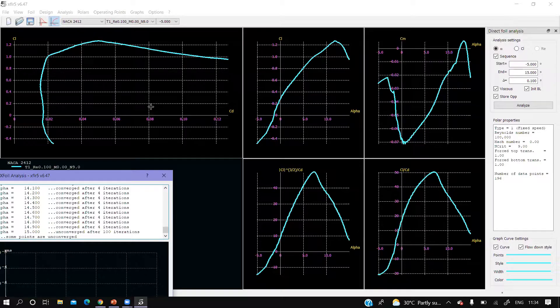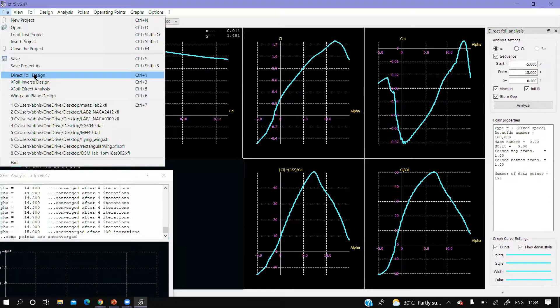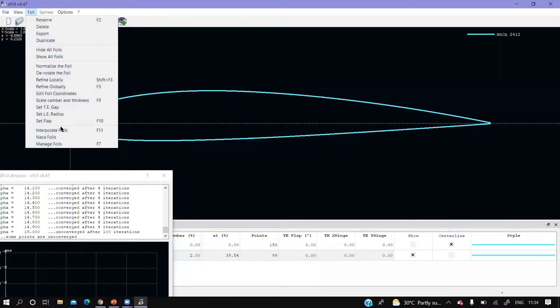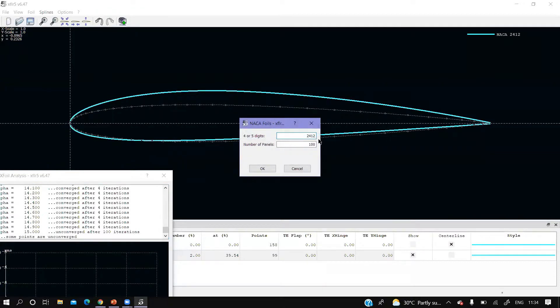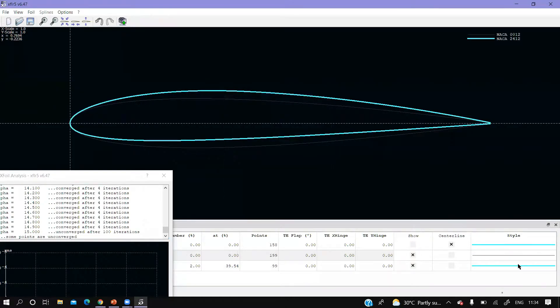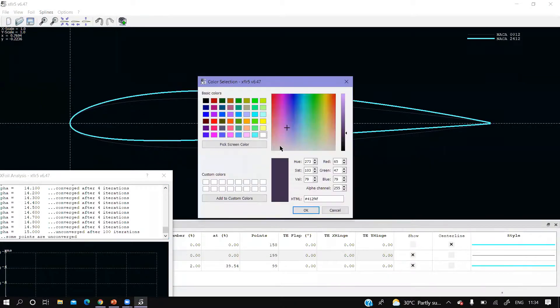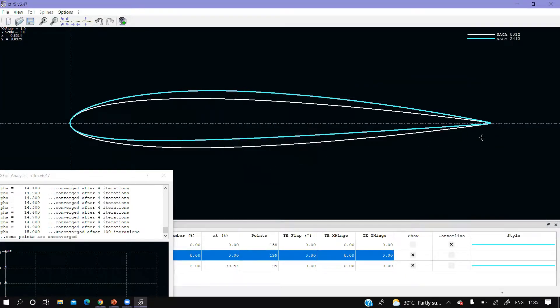Let me add one more airfoil which may be a symmetric one. NACA foils, let me choose NACA 0012. 200 panels, that seems good. Let's color it white and give it some width.